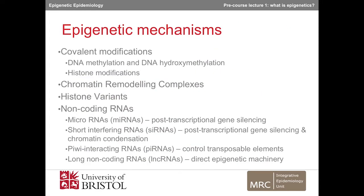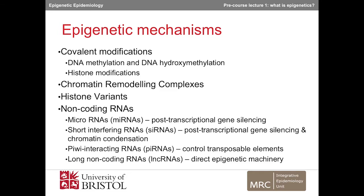There are several biological mechanisms that fulfil the definition of epigenetic. These include covalent modifications, where chemical groups change the way DNA is read by either attaching to the DNA itself or to the histone proteins that DNA is wrapped around. Other epigenetic mechanisms include chromatin remodelling complexes, which move the DNA in histones to make the chromatin more or less dense, wrapping the DNA around different forms of histone proteins, and various types of non-coding RNAs, including microRNAs, which attach to the gene's transcripts to silence genes after transcription.